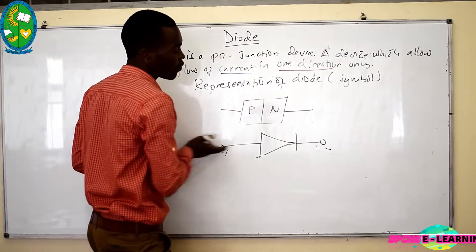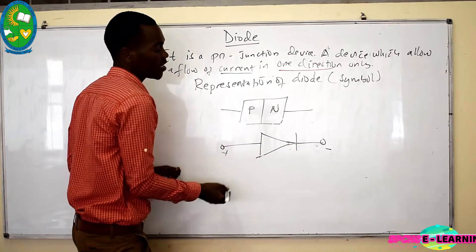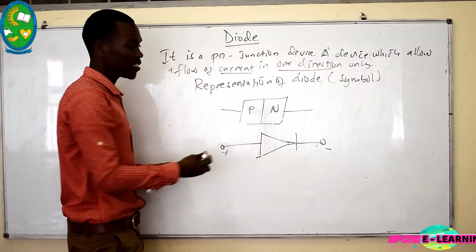So this shows that the current can flow in this direction. This shows that it is like this one. So this is the positive side and this is the negative side.